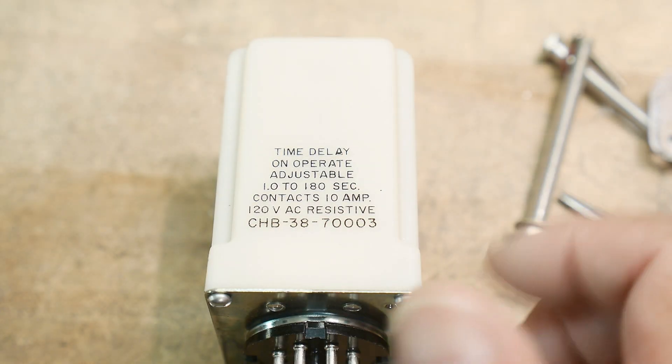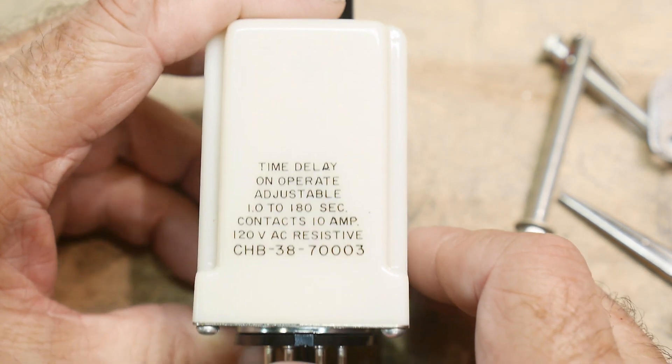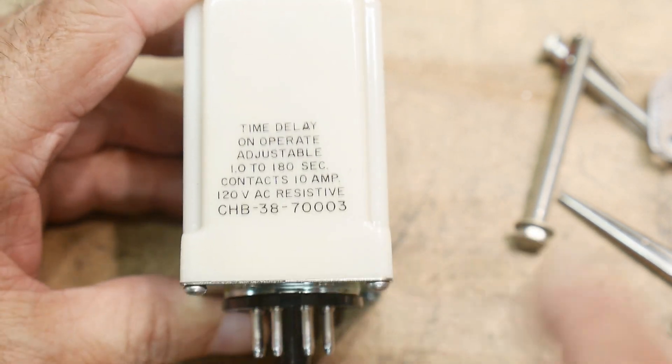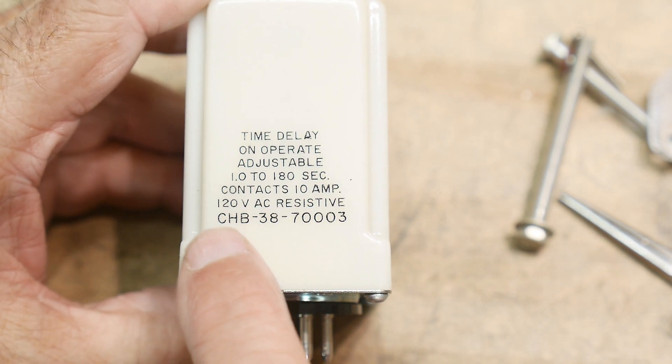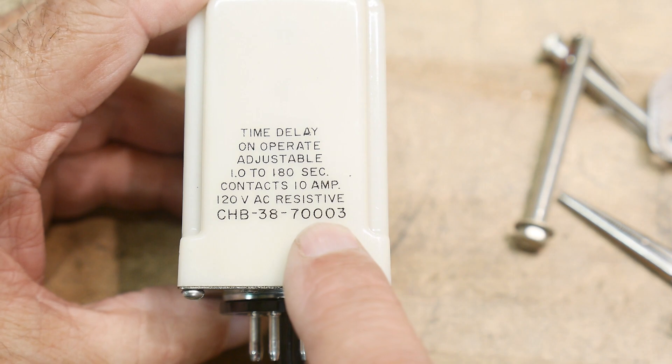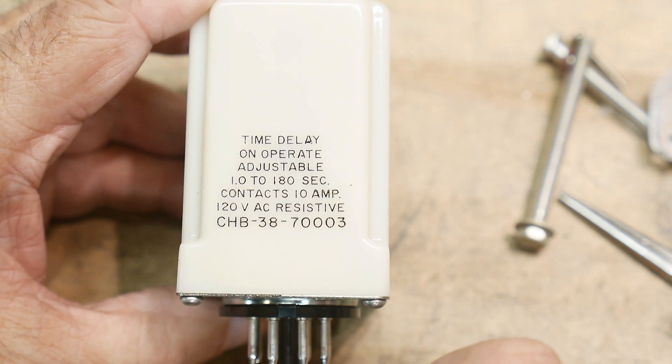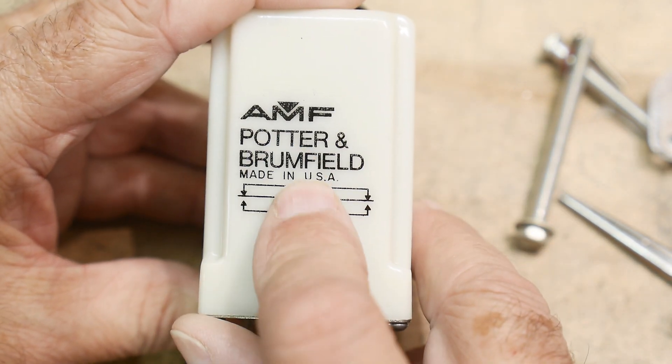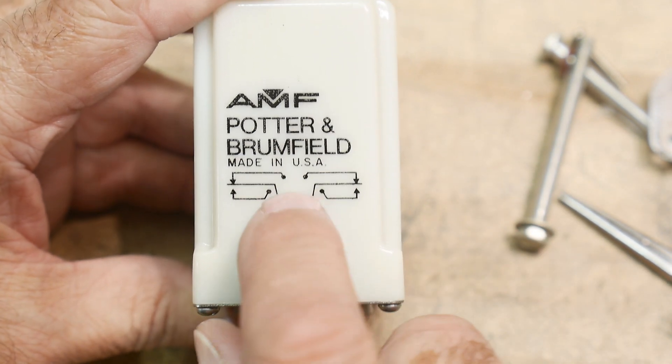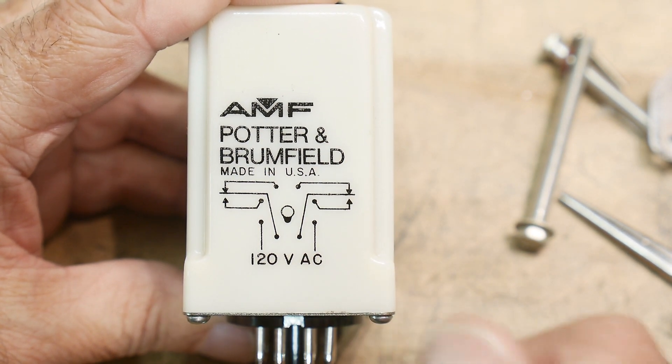Alright, chip of the day. Well, it's a big chip, maybe not even a chip. Okay, it's not a chip, but it is the device for the day. It is a CHB-38-70003, a time delay from 1 to 180 seconds, and it's made by AMF Potter and Brumfield. So Potter and Brumfield was very popular, I don't know if they're still around or not.